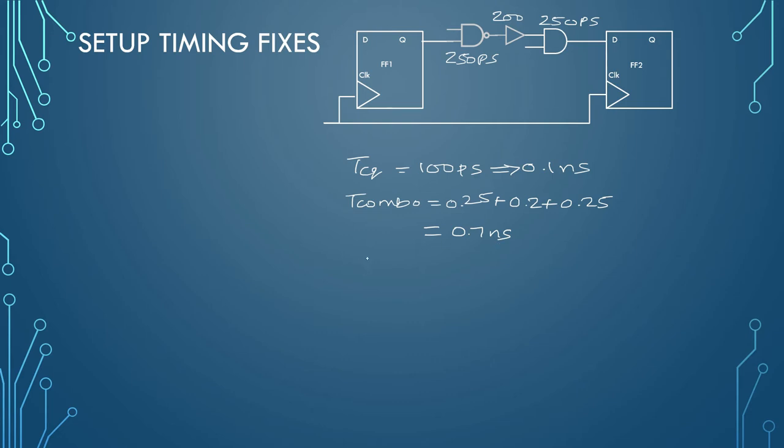Now let's assume that your clock period is 1 NS. Let's also assume that you have skew and jitter, so that will be considered under the uncertainty portion of 250 picoseconds, that will be 0.25 NS.